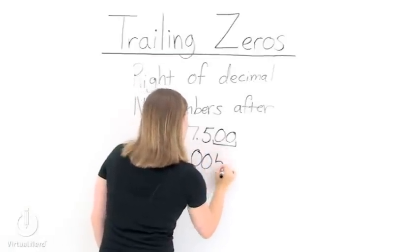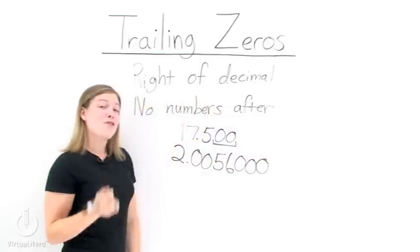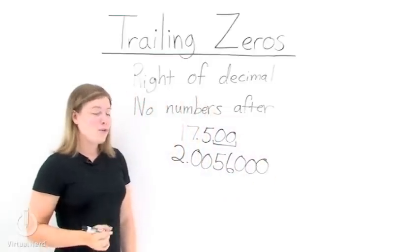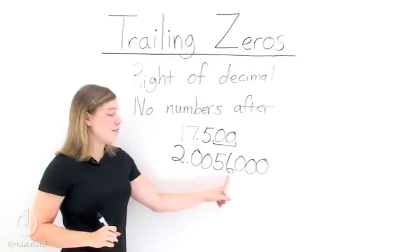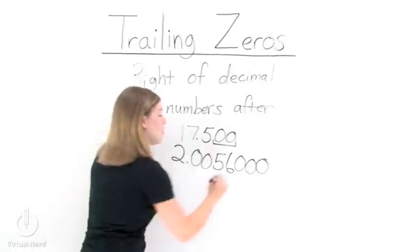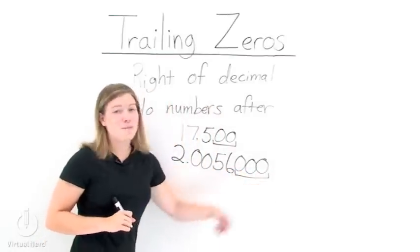Let's take another, 2.0056000. Find the trailing zeros. Well, these two zeros are not trailing zeros, because there's a 5 and a 6 after them. These three zeros on the end, though, are trailing zeros, because there's no numbers after them.